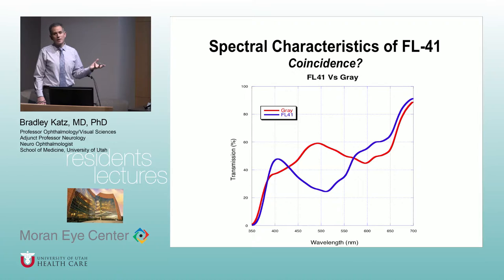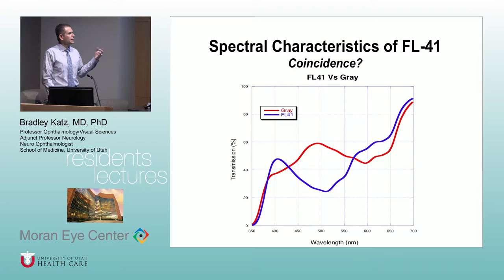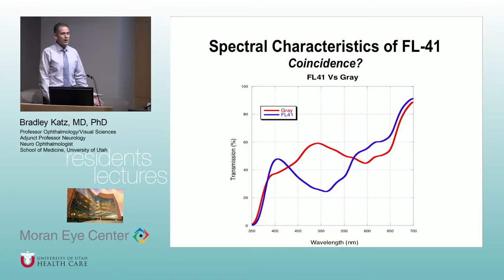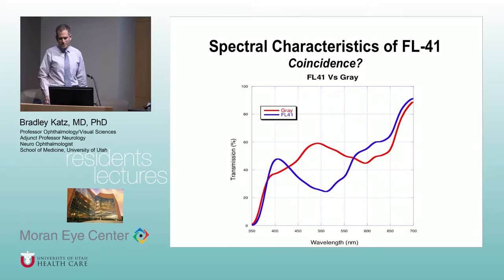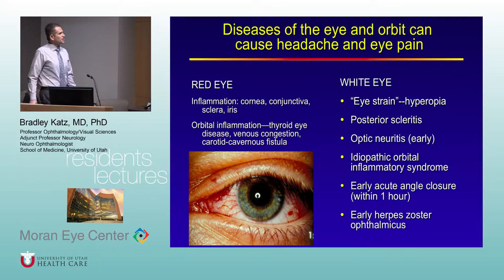FL-41 appears to work by blocking wavelengths of light that stimulate intrinsically photosensitive retinal ganglion cells and make people with migraine uncomfortable. It's inexpensive, available at the Moran Eye Center, and can even be applied to contact lenses. The first time I started prescribing it, patients came back saying 'I can go back to work, back to school, back to church' — I was really surprised by how helpful such a simple, inexpensive thing could be.